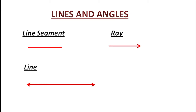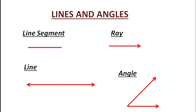Next is ray. A ray has one endpoint and the other end we cannot find out. We can extend it on one side only.